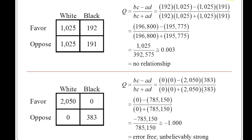Here's an example at the bottom with the same marginal frequencies, but this time reallocated so there's a perfect relationship. If I know a person's race, I can perfectly predict whether they favor or oppose capital punishment: 100 percent of white respondents favor it and 100 percent of black respondents oppose it. When I calculate Yule's Q in this case I get minus one — a perfect relationship.